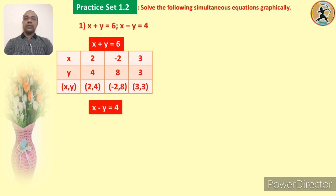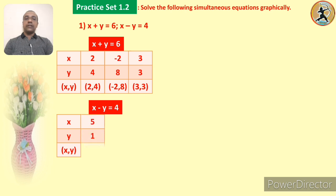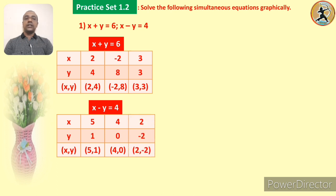Now let us consider the second table for the second equation x minus y is equal to 4. We have to find order pairs whose difference is 4. The first pair is (5, 1), since 5 minus 1 becomes 4. The second order pair is (4, 0), since 4 minus 0 is equal to 4. And the last one is (2, -2), since 2 minus negative 2 becomes plus 4. So we complete the table of order pairs for both equations.